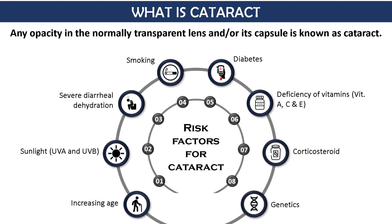Lens opacity can be present at birth or can develop after birth, and the opacity can be present in different parts of the lens. This makes the basis for us to classify cataract for easy understanding. We can classify cataract in two ways: one is etiological classification, and the other is morphological or anatomical classification.